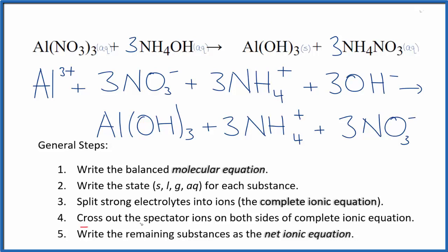Now we'll cross out spectator ions. They're on both sides of the complete ionic equation. So we can see that we have three nitrates here in the reactants. In the products, we also have three nitrates. So these are spectator ions. We can cross them out. They're on both sides.